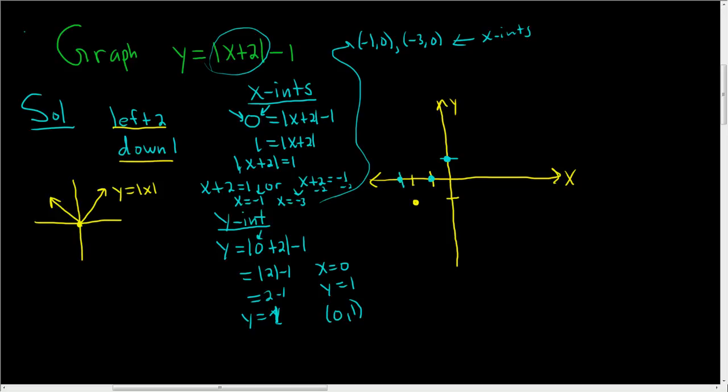And now we can finish our graph. So all we have to do now is connect the dots and make it look like a v. It's very hard to draw a straight line. Maybe that's the hardest part of the problem. So there is our beautiful absolute value function, the absolute value of x plus 2 minus 1. And that is the final answer. I hope this video made sense.